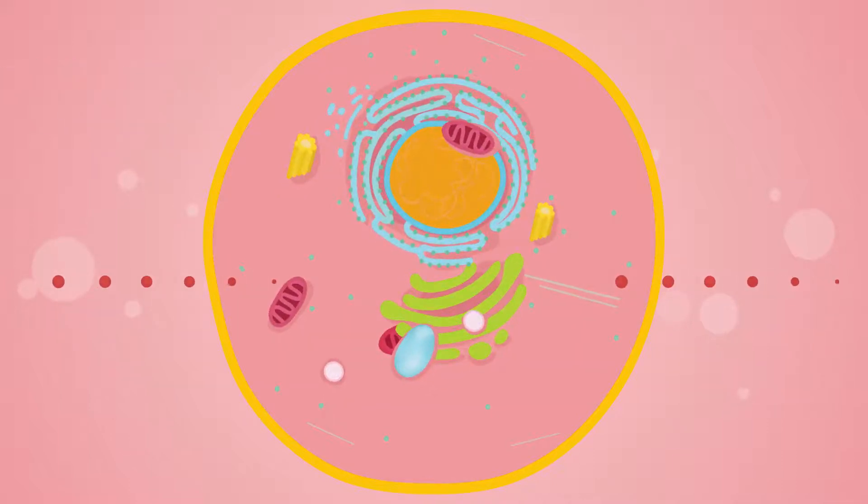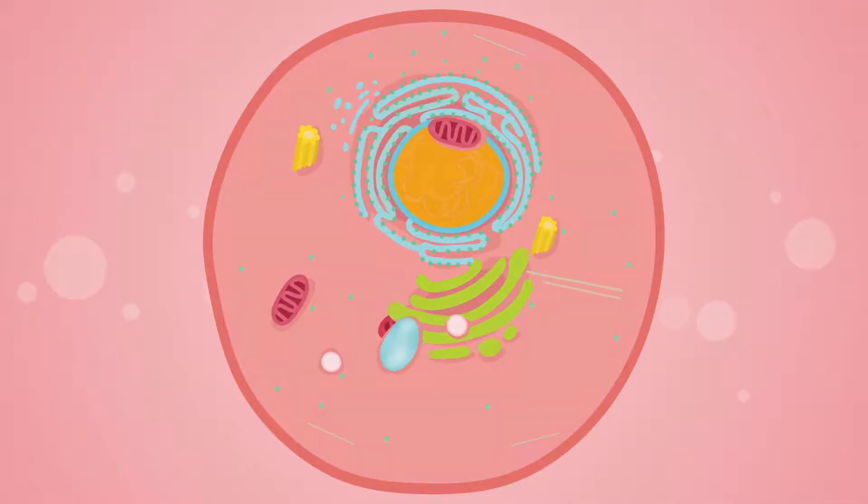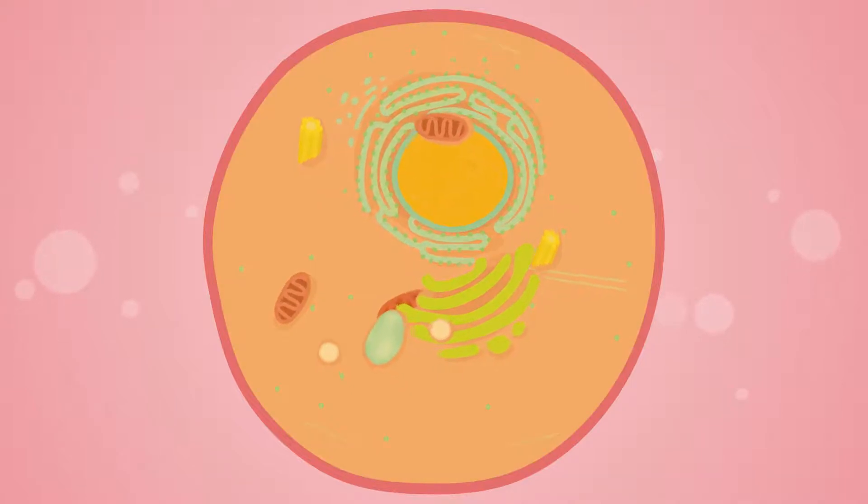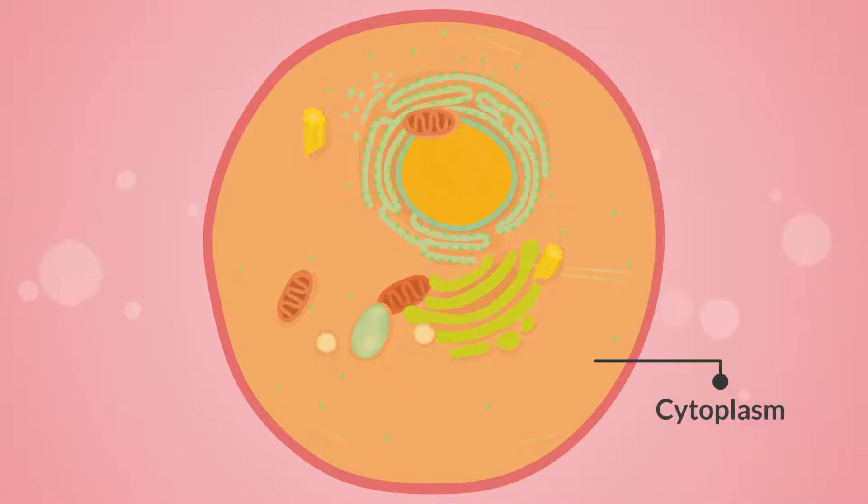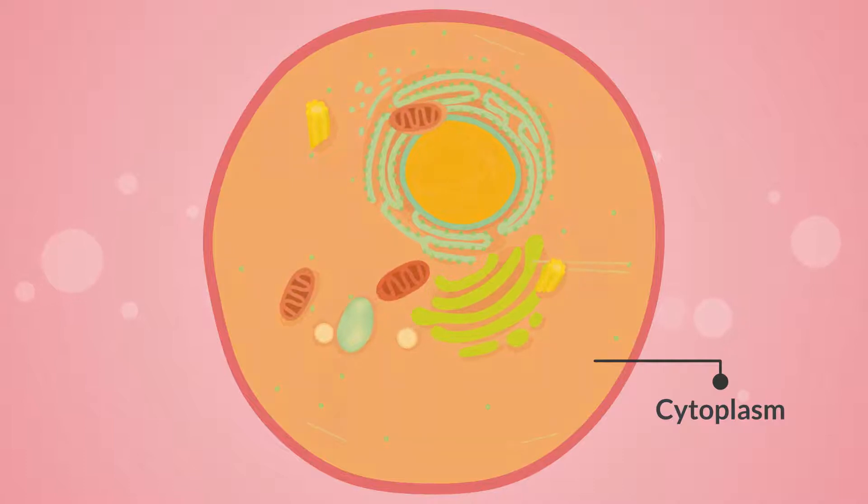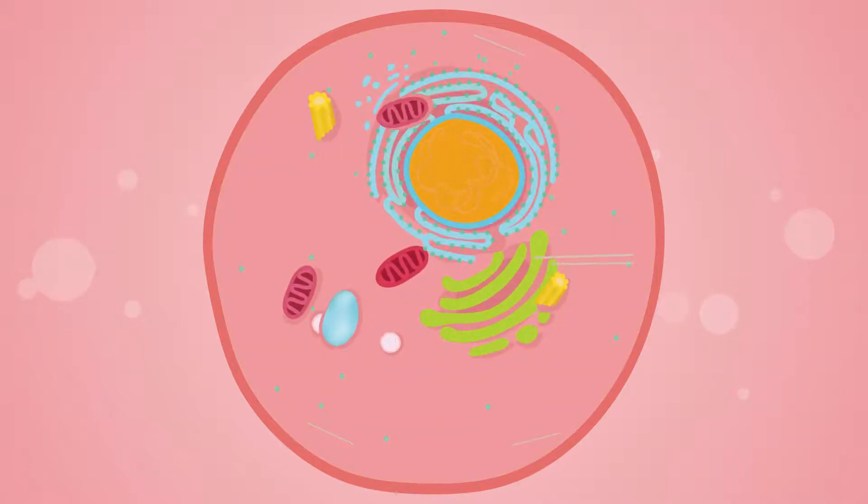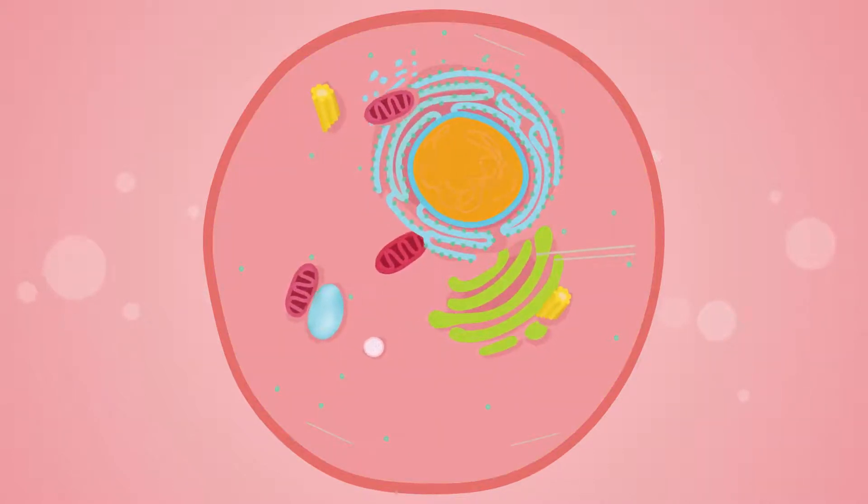Inside the cell there is a liquid that looks a bit like jelly. This is called cytoplasm. Floating around in the cytoplasm are lots of little parts that all have different jobs that help the cell to work.